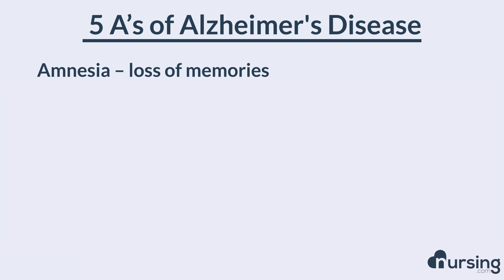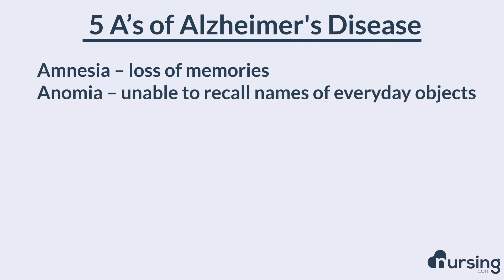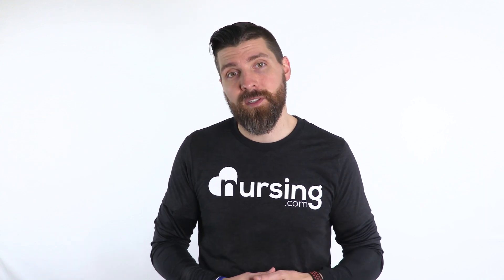The next A is anomia. Anomia is the inability for patients to recall names of everyday objects — so they may not remember a toilet or a cup. This is an occurrence that happens with dementia patients and can point to Alzheimer's type dementia.